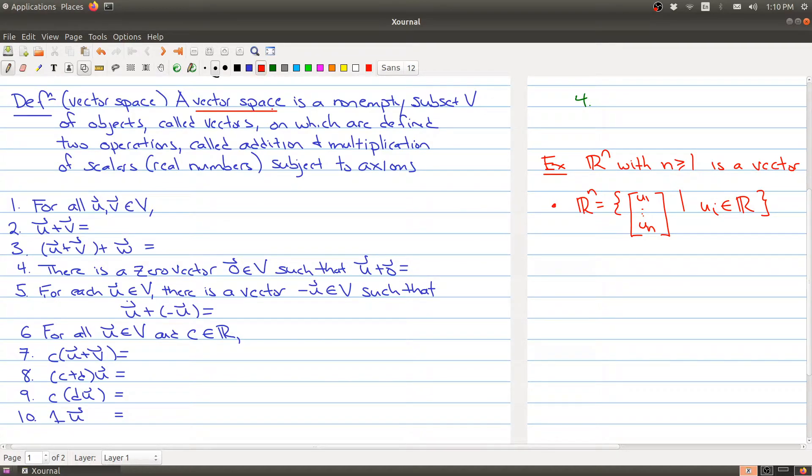So a vector space is a non-empty, I don't know why it says subset, I should say a non-empty set V of objects. And the objects inside of V are called vectors on which are defined two operations. So there's going to be a way that you can add things in your set together to get another thing in your set.